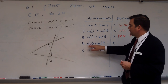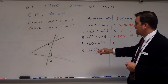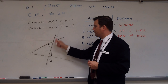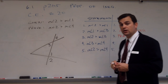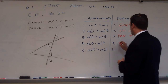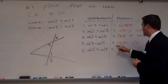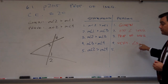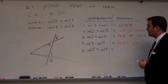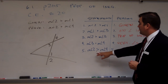Statement 4: the measure of angle 3 is actually equal to the measure of angle 4. Remember that those are vertical angles, and vertical angles are always congruent. So vertical angles is my reason for statement 4.